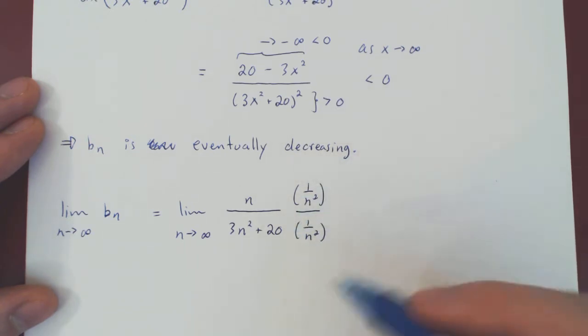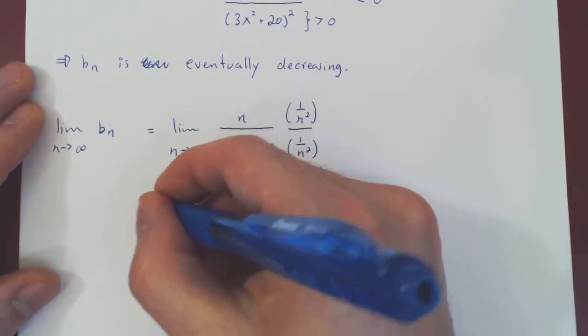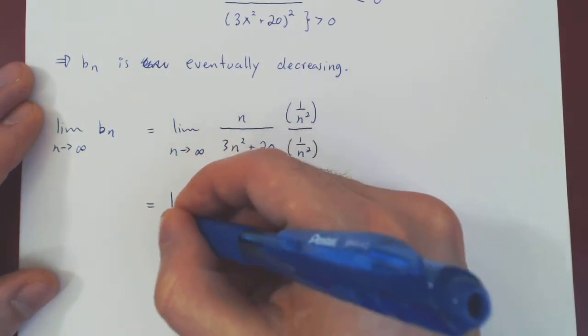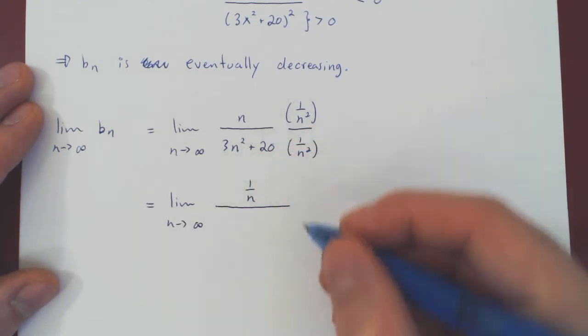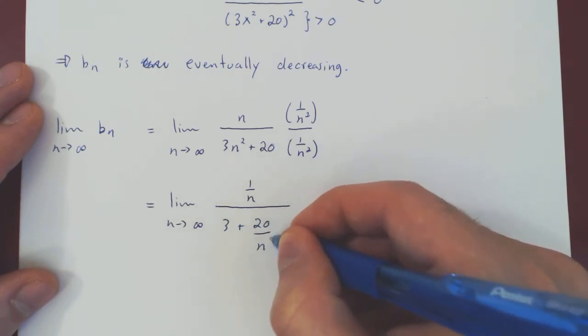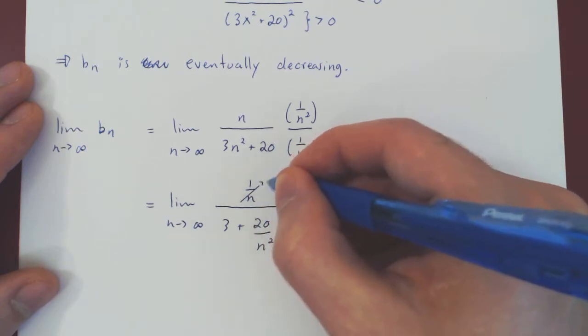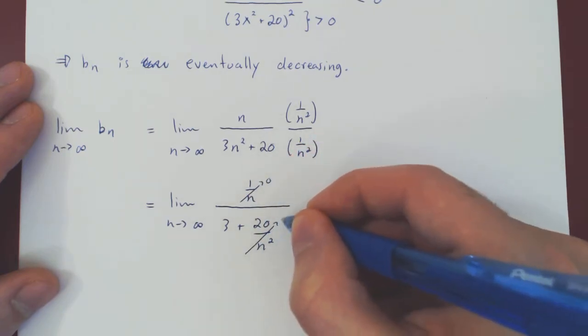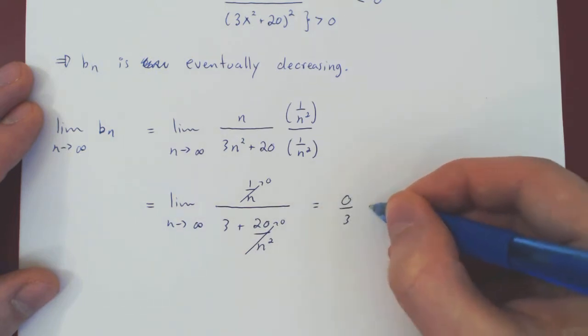This is simply 1, so we're not cheating here. And now we'll have a very simple limit. We'll have 1 over n on the numerator over 3 plus 20 over n squared. So as n goes to infinity, 1 over n goes to 0, 20 over n squared goes to 0, so we're left with 0 over 3, which is clearly 0.